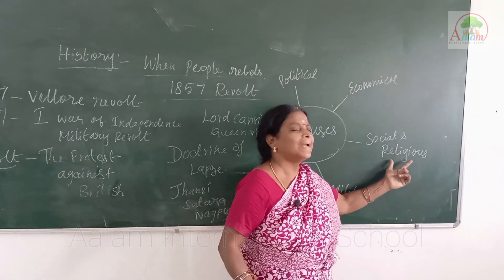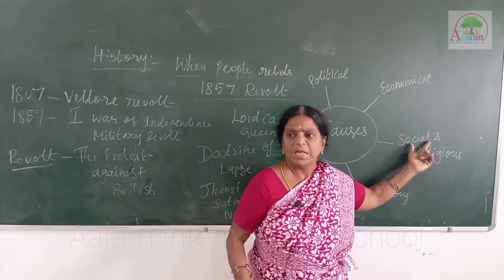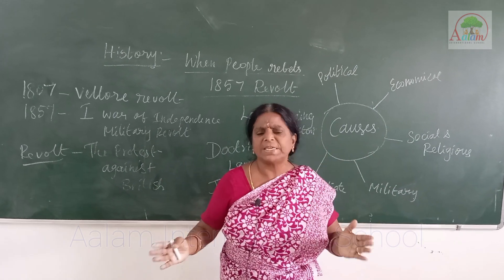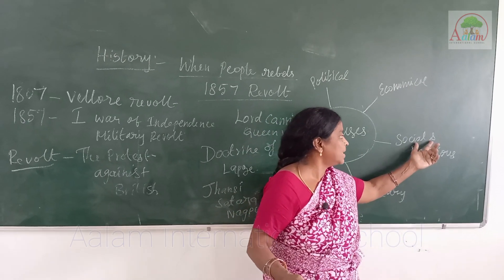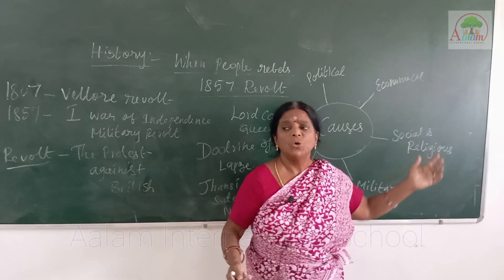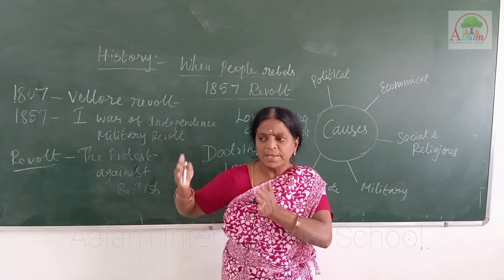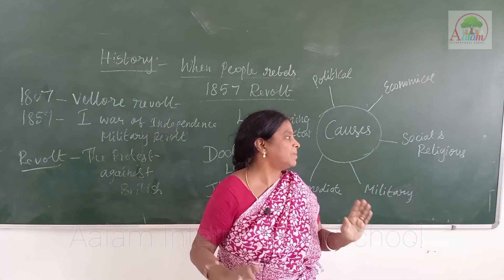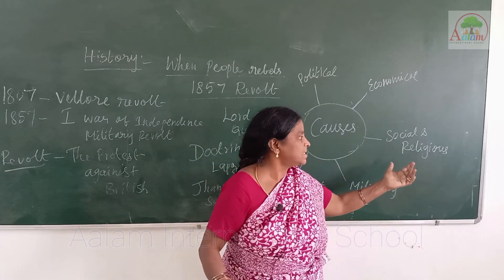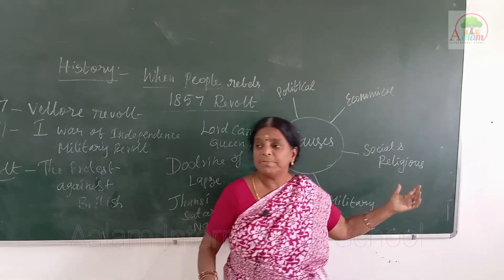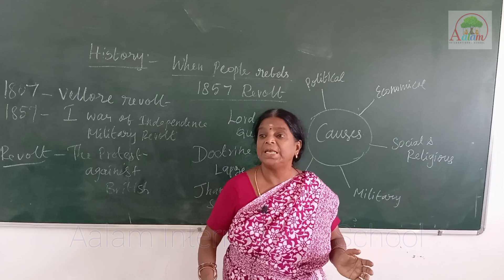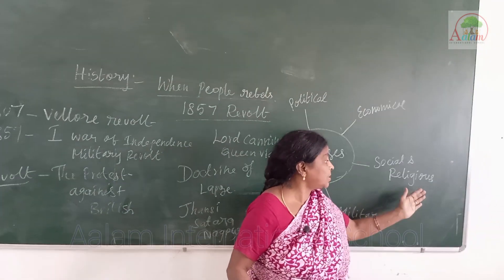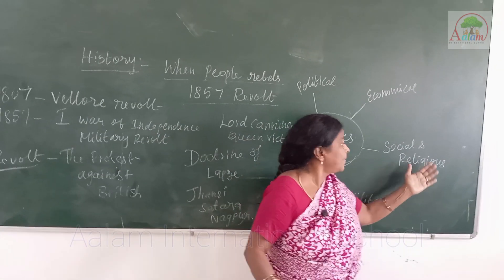Next are the social and religious causes. Socially, British rule ill-treated Hindu and Muslim people, did not allow them to improve their standard of life, and gave appointments in higher offices only to British people, not Hindus or Muslims. Religiously, Muslims and Hindus were asked — compulsorily — to convert into Christianity. The British compelled Muslims and Hindus to convert to Christianity. These are the social and religious causes.